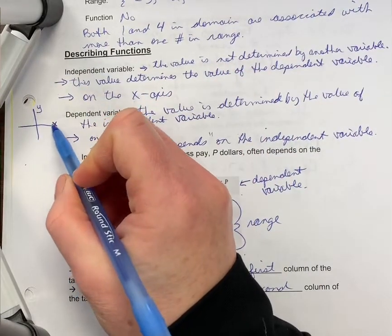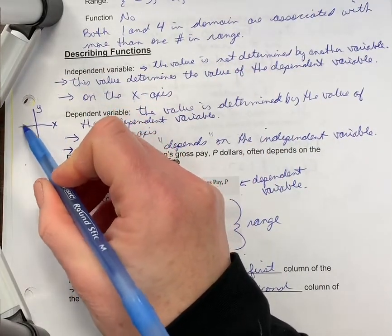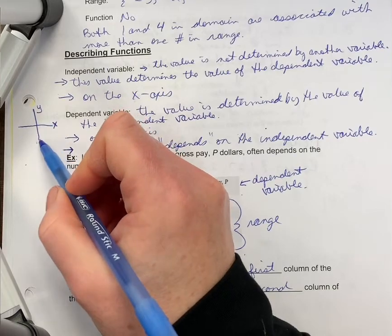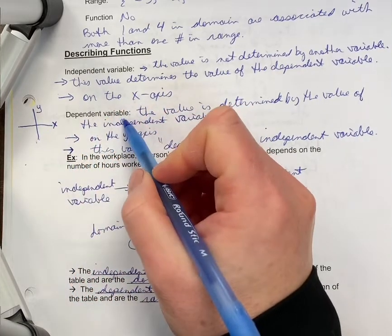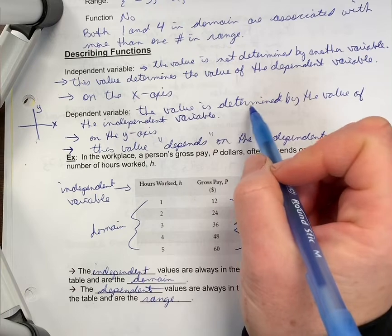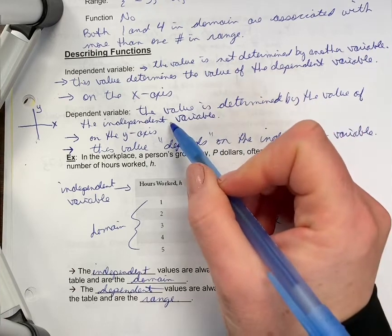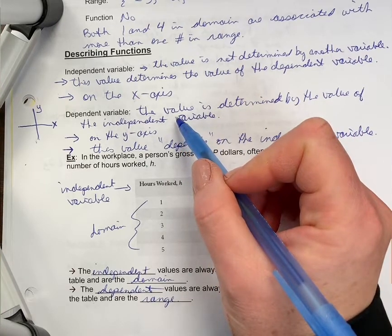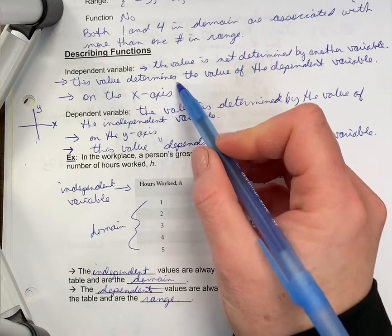X-axis and y-axis - that's just a quick review. X is the horizontal axis, Y is the vertical axis. The dependent variable is the value that is determined by the value of the independent variable. So it's going to depend on what the independent variable is.